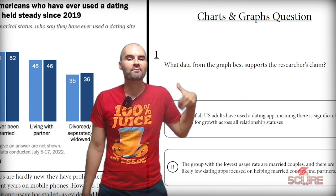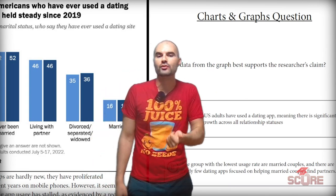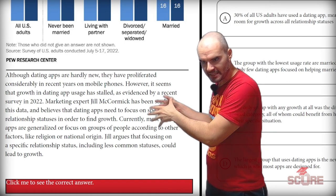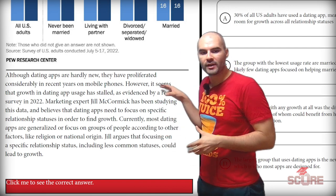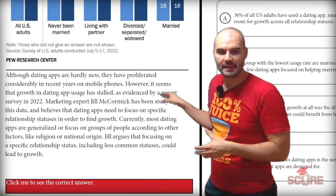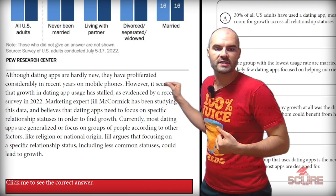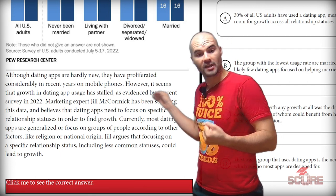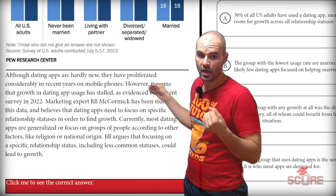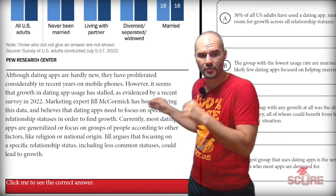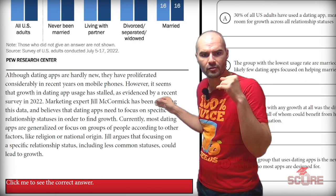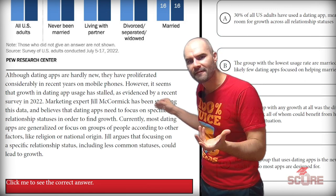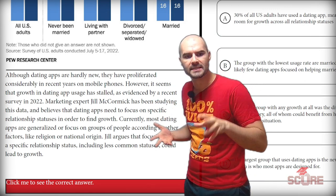It's going to ask you what data from the graph best supports the researcher's claim. What you need to do is go straight to the text and try to figure out what that claim is. Jill argues that focusing on a specific relationship status, including less common statuses, could lead to growth. I'm not quite sure what we're talking about in terms of growth here, so I may want to go read that first sentence to get a better idea.